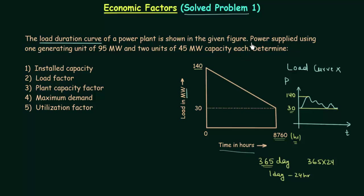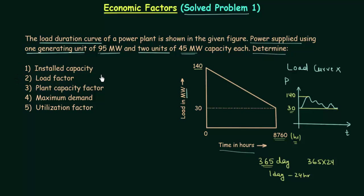Let's complete reading the problem. Power is supplied using one generating unit of 95 megawatt and two units of 45 megawatt capacity each. We have to determine: first, installed capacity; second, load factor; third, plant capacity factor; fourth, maximum demand; and fifth, utilization factor.